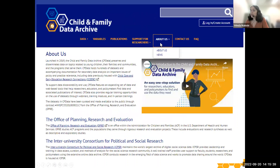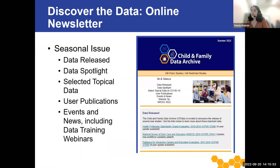Under the About Us tab, users can learn more about CFData, our project team, and announcements, data releases, and upcoming trainings through the news link. CFData also has a seasonal online newsletter where we highlight new data released, recent user publications, events, and news, including upcoming data training webinars. Each newsletter has a theme where we spotlight data related to that theme. Past themes have included dual language learners, teacher and center characteristics, parents' mental health, and data related to COVID-19. Our upcoming fall newsletter focuses on resources to help students apply for data for their dissertation or master's thesis. We encourage everyone to sign up for our listserv on our website under the Contact Us tab, and then you will receive the newsletter in your inbox.